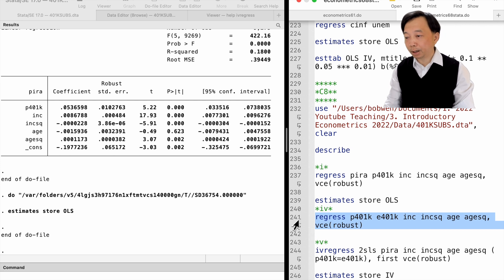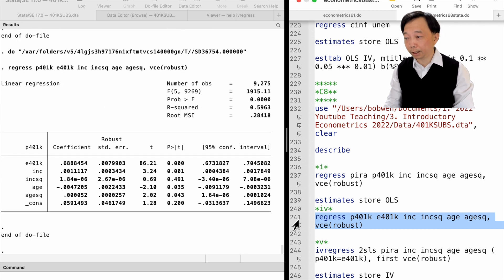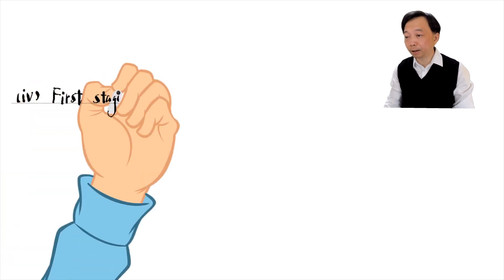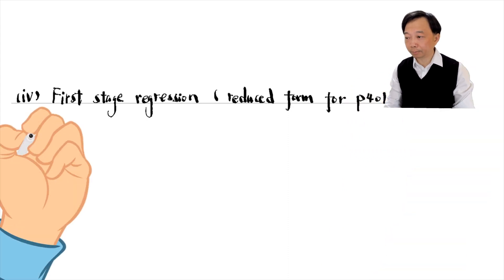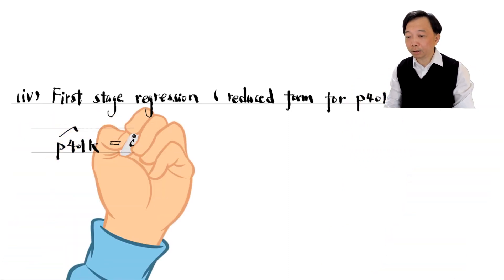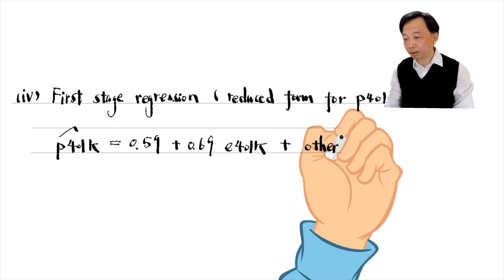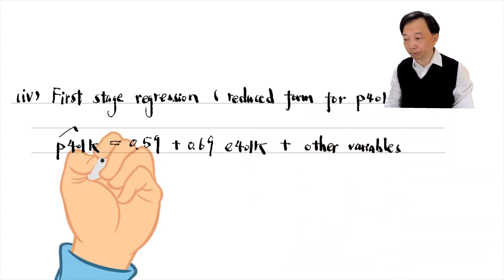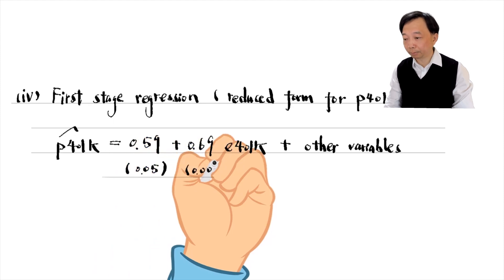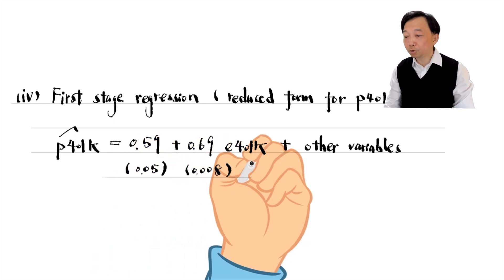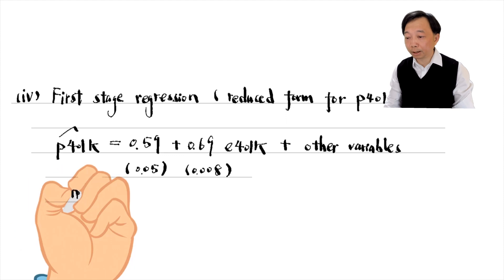We regress P401k on E401k and other exogenous variables. The eligibility of the 401k plan has a positive and significant partial effect on the participation of the plan, holding age and income fixed. The eligibility of the plan increases the probability of participation in the plan by 0.7. The instrument relevance requirement is satisfied.